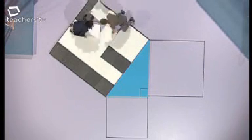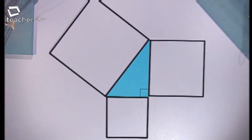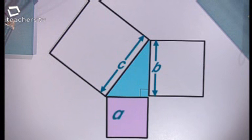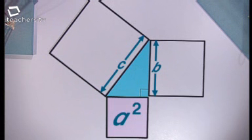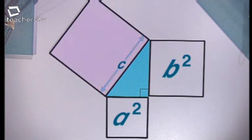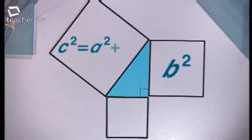As you can see, the area of the two squares on the smaller sides exactly fits the area of the square on the hypotenuse. If we call the sides A, B, and C, we can convert what you've just seen into a useful formula. The area of this square will be A times A, which is the same as A squared. The area of this square is B times B, which is B squared. And this area is C squared. So the area C squared must equal A squared plus B squared.